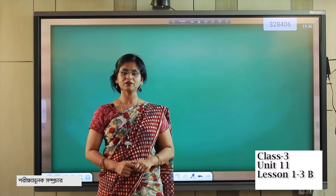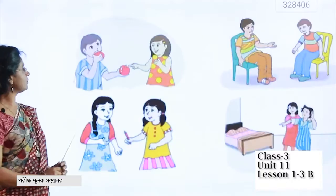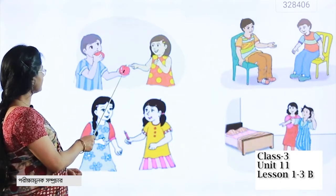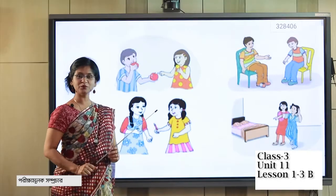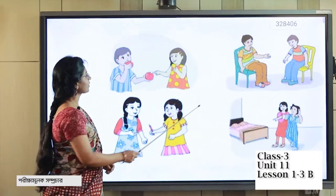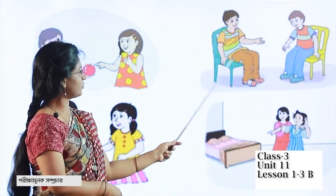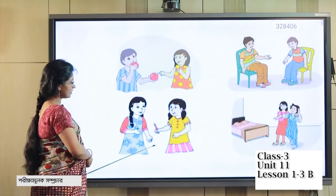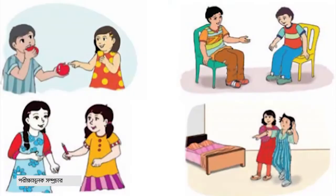Now I am going to show you a picture. Please look at it carefully. What do you see in the picture? Look at this — what do you see? She wants to take this apple. What will be the request? Please think. And then this picture — that boy is sitting and someone wants him to stand up. What will be the request? And there is a bed also. What will be the request?